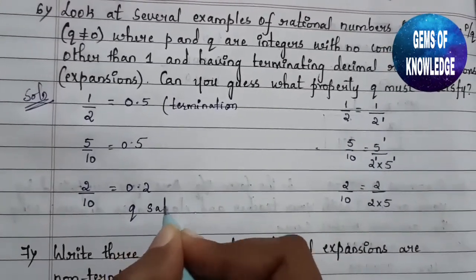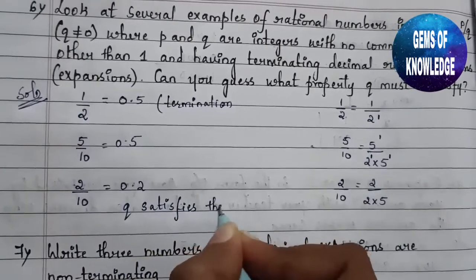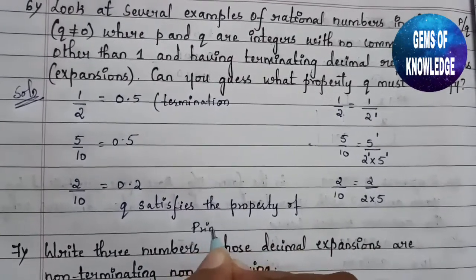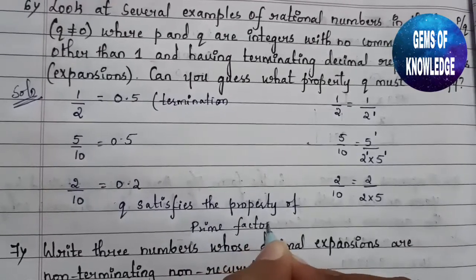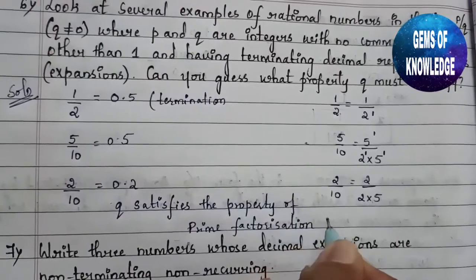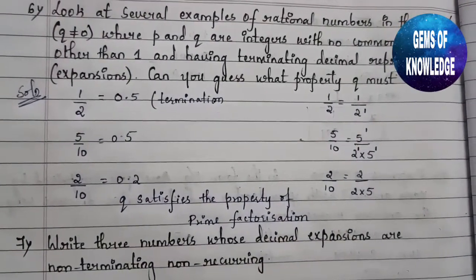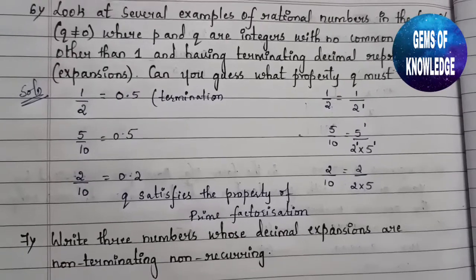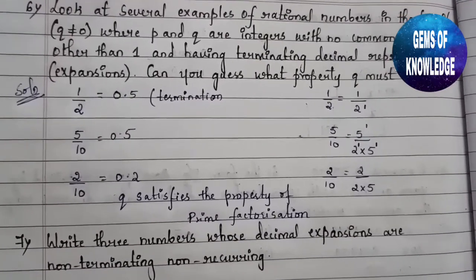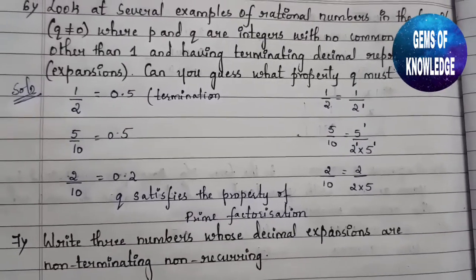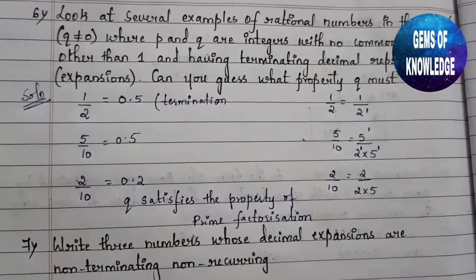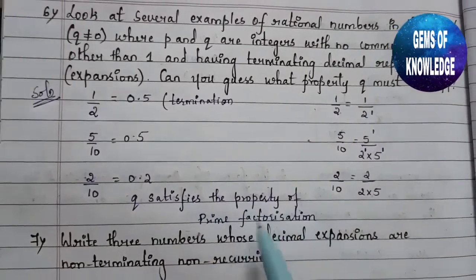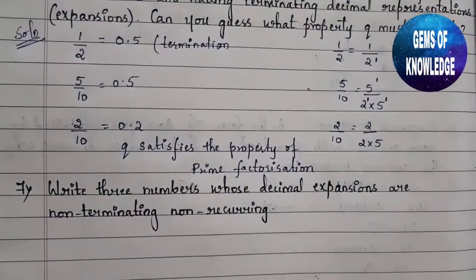We can write that q satisfies the property of prime factorization. In prime factorization, we use prime numbers — numbers that are only divisible by 1 and themselves. Numbers like 2, 5, 3, 7 all come under prime factors. So we can say q satisfies the property of prime factorization.